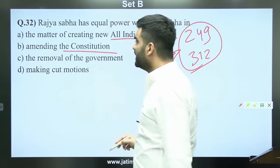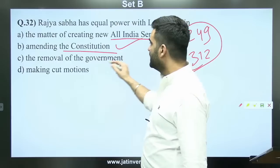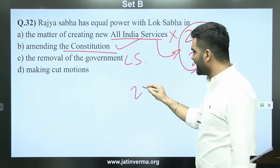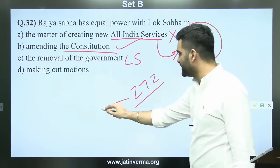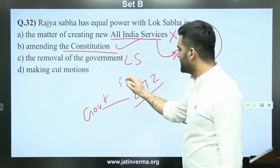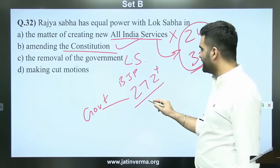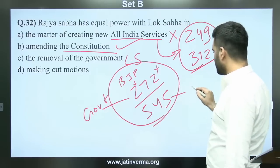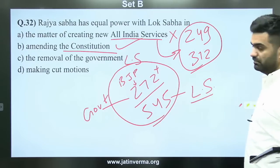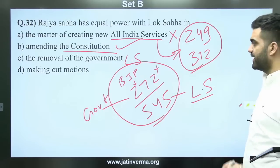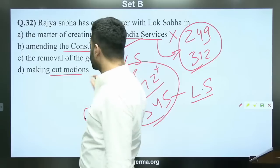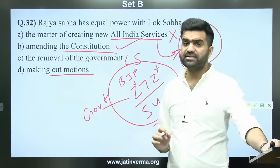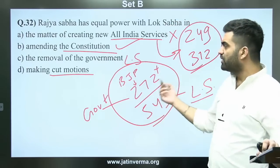Article 312 comes into play here. On amending the Constitution — are Lok Sabha and Rajya Sabha's powers equal? Yes. On removal of the government — no, Lok Sabha has more powers. The government is formed by the party with 272+ MPs in Lok Sabha. In Rajya Sabha this is not required. Cut motions on the budget cannot be introduced in Rajya Sabha.